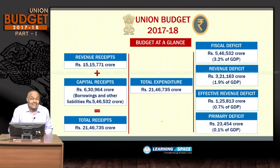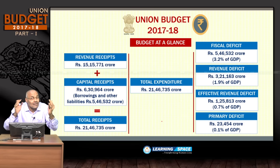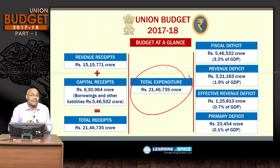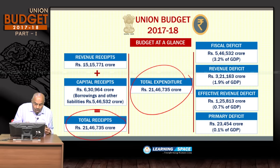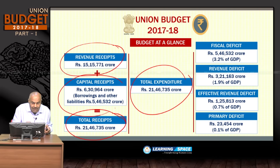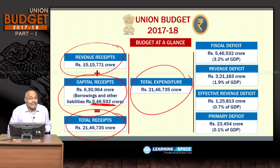Looking at the budget at a glance: total expenditure of the central government is ₹21.46 lakh crores, and total receipts equal that same amount. Revenue receipts are around ₹15 lakh crores and capital receipts around ₹6 lakh crores. Out of capital receipts, borrowings of about ₹5.46 lakh crores constitute the fiscal deficit.